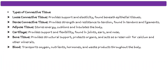Connective tissues can be further categorized as: loose connective tissue, which provides support and elasticity found just below epithelial tissue; dense connective tissue, which provides strength and resistance to tension, found in tendons and ligaments; adipose tissue, which stores energy and cushions and insulates the body; cartilage, which provides support and flexibility found in joints, ears, and nose; bone tissue, which provides structural support, protects organs and acts as a reservoir for calcium and other minerals; and blood, which transports oxygen, nutrients, hormones, and waste products throughout the body.